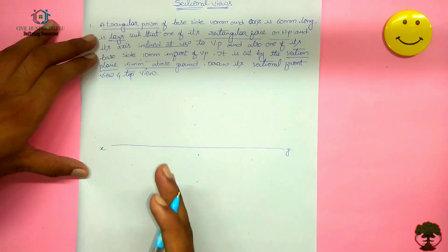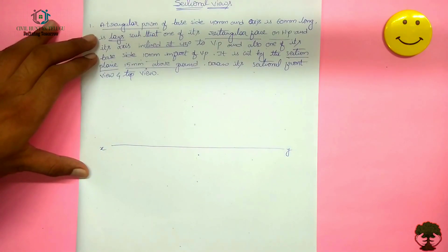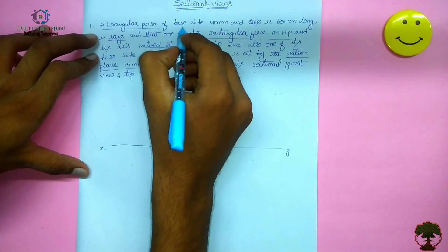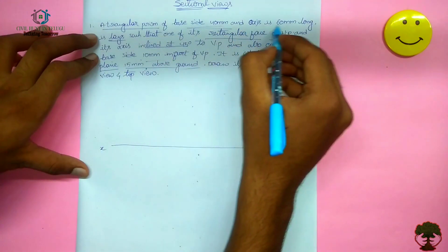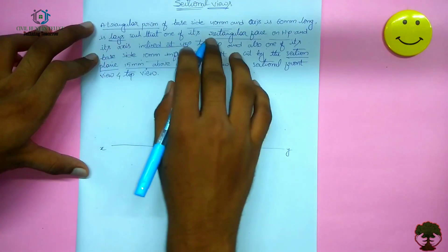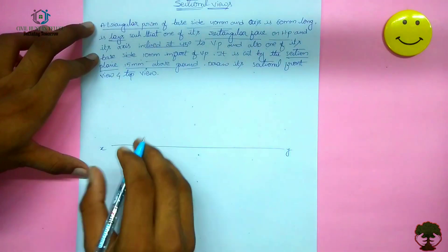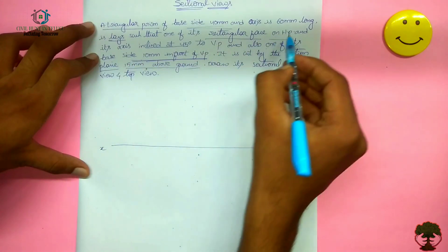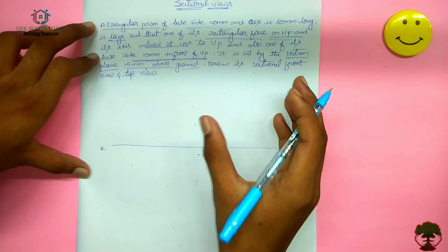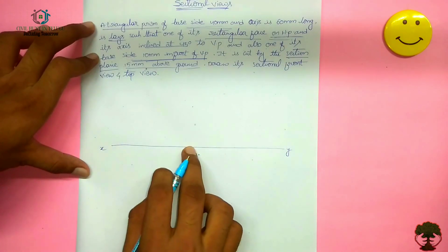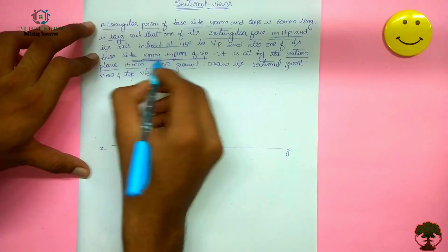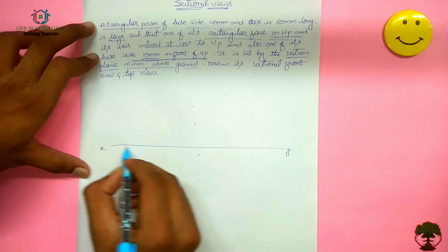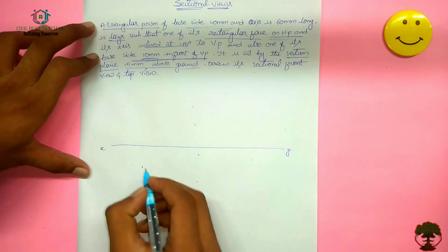I will show some information. The base is here — this is a triangular prism. Base side is 40mm and its axis is 60mm long. Laying such that one of its rectangular faces is on the HP. In front of the VP is 10mm.